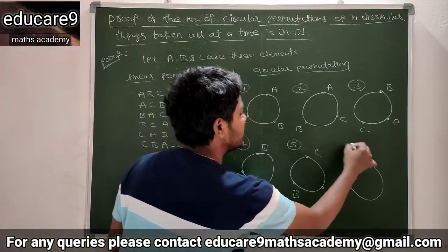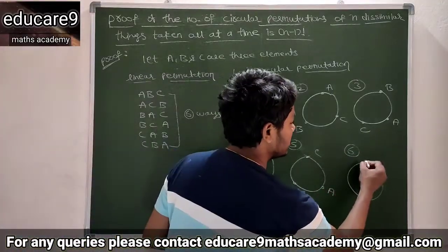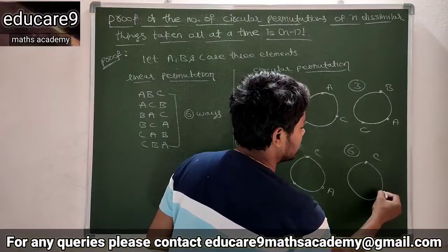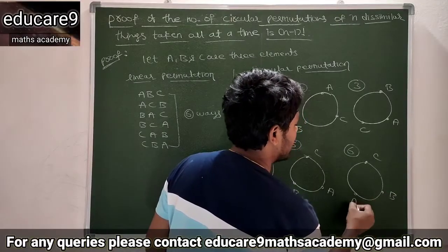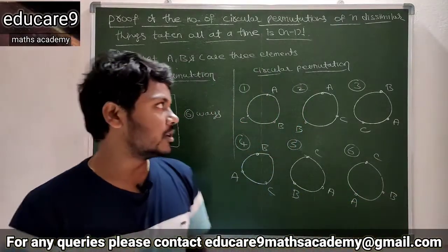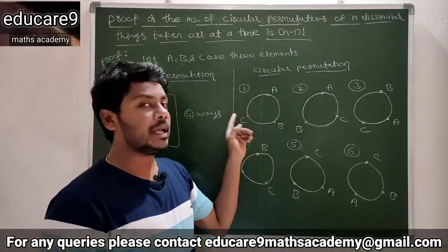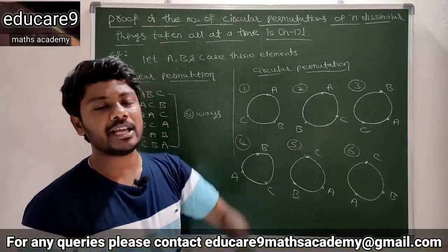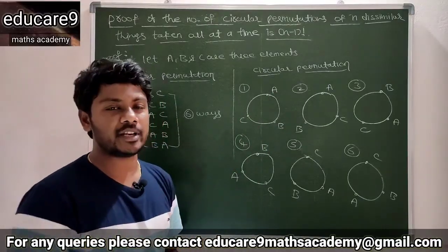The last arrangement is C, B, A. This is C and this is B and this is A. You know that the elements or members around a circuit is called circular permutation.